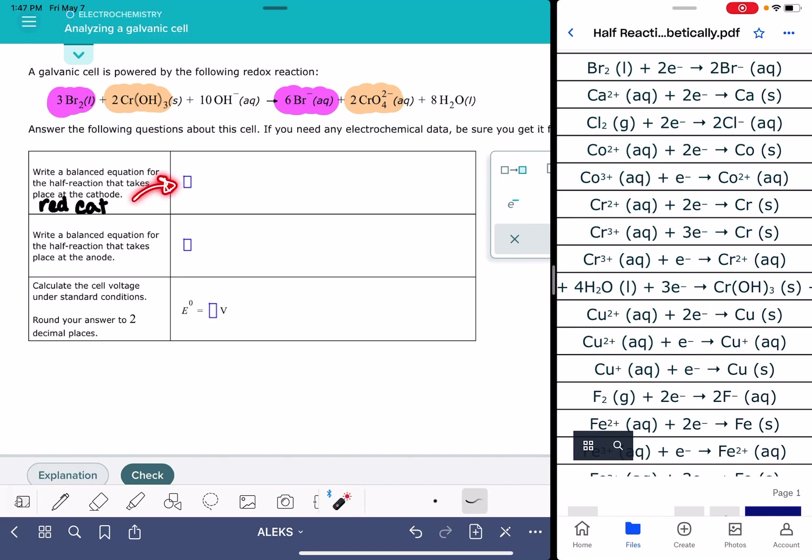So in this box, we want to be writing the reaction that is the reduction reaction, and reduction is the reaction where electrons are being gained or added to the reactant. So that's this reaction right here, which means I'm going to write it exactly the way that it's shown in this table.